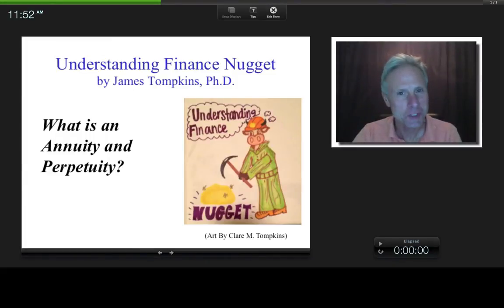Hi everybody, this is James Tompkins and welcome to another Understanding Finance Nugget. What I've done so far in some of these other nuggets with time-valued money has been related to single cash flow principles. And today we're going to get into multiple cash flow principles. In particular, we're simply going to ask the question, what is an annuity and what is a perpetuity, which are types of multiple cash flows.